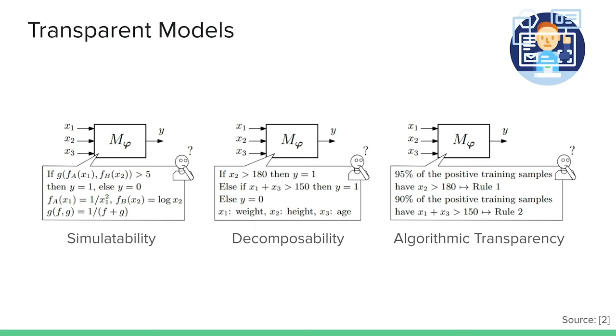For transparent models, let's clarify the three categories. Simulatability is the ability to simulate or think about a model as a human — to run thought experiments. If the system has certain mathematical functions or rules, we can say: what happens if this variable is bigger than the other? We can compute and simulate this and see what the outcome is.